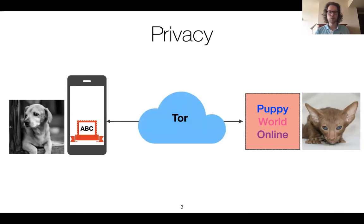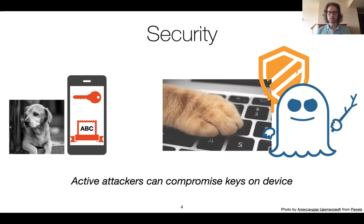Puppy uses the Tor network to have network anonymity and he uses attribute-based credentials to authenticate anonymously. So from a privacy perspective, Puppy is completely set. However, there are still some worries remaining about security. In particular, recent attacks on personal devices have had Puppy concerned, because all these advanced privacy-enhancing technologies and many cryptographic protocols rely on the security of a secret key stored on these devices. When an attacker such as an evil kitten manages to get access to these devices, they get the key and can do all kinds of things.